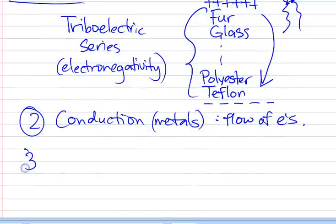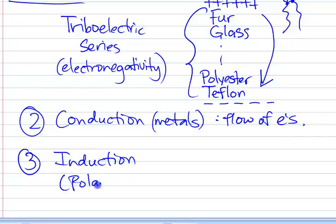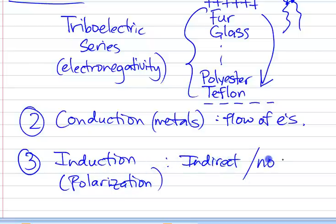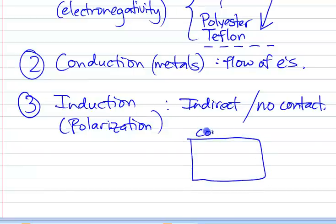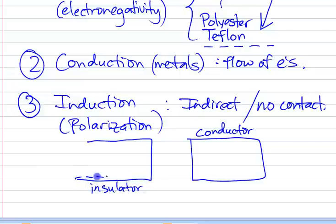Now the third one is the trickiest. This is what we call induction, which we sometimes call polarization. And this is an indirect method of charging. So there's no contact. And all three of these you're going to see in a lab a little bit later on if you're taking chem-phys. So how does induction work? Well, pretend like I have here a conductor. So it's neutral to start with. And over here I have an insulator. Maybe it's Teflon.